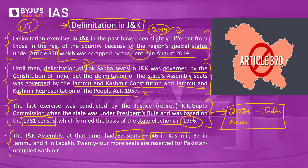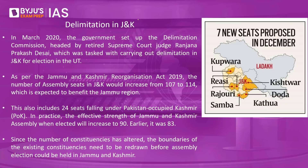As per the earlier delimitation, the J&K assembly had 87 seats, of which 46 were allotted to the Kashmir region, 37 to the Jammu region, and 4 seats to the Ladakh region. Apart from this, 24 seats were allocated to Pakistan-occupied Kashmir, as India claims this region to be an integral part of J&K.